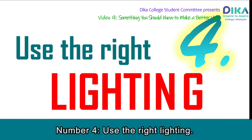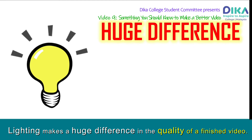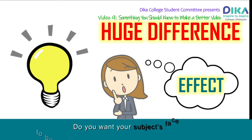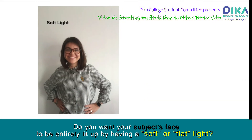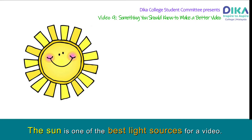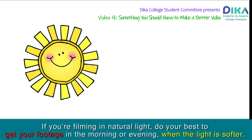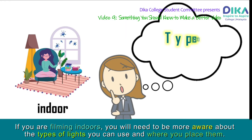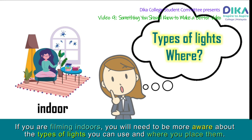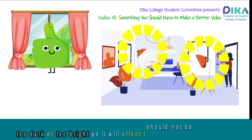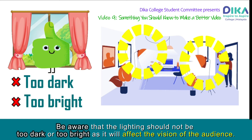Number 4: Use the right lighting. Lighting makes a huge difference in the quality of a finished video. Before you set up your light source, consider the effect you want to create. Do you want your subject's face to be entirely lit up by having a soft or flat light? Or do you want some shadows by having hard light? The sun is one of the best light sources for a video. If you are filming in natural light, do your best to get your footage in the morning or evening when the light is softer. If you are filming indoors, be aware of the types of lights you can use and where to place them. Windows are a good natural light source, and you can also use a large lamp. Be aware that lighting should not be too dark or too bright as it will affect the vision of the audience.